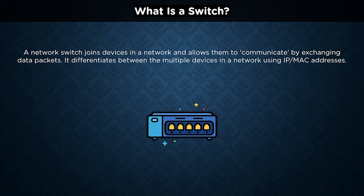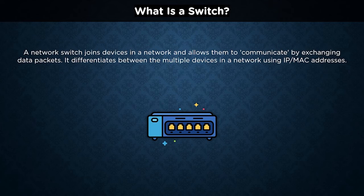A network switch joins devices in a network — such as computers, printers, and wireless access points — and allows them to communicate by exchanging data packets. Switches can be both physical hardware devices or software-based virtual devices. The vast majority of network equipment in modern data networks are switches. They link desktop PCs, access points, automated equipment, and IoT devices via wired connections, as well as the computers and data centers that run virtual machines, along with servers and most storage equipment.